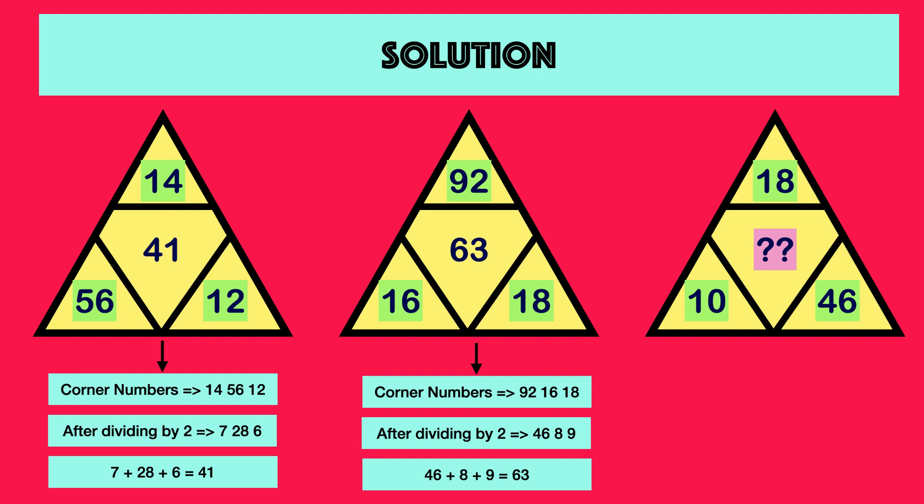Similarly in the second triangle, corner numbers are 92, 16, 18. After dividing each number by 2, resulting numbers are 46, 8, 9. Further adding all numbers, result is 63, which is the number represented in center of second triangle.